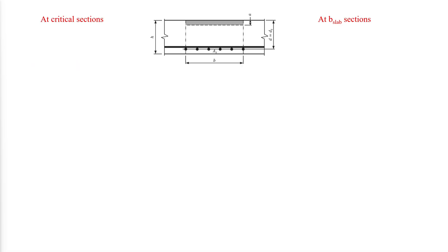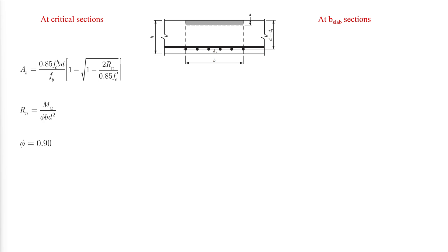The required flexural reinforcement at a critical section in a column or middle strip of a two-way slab can be found using the Rn equation, where Rn and φ are defined accordingly. The factored bending moments, Mu, can be obtained from the direct design method described in the previous video — a link is provided in the description. The area of flexural reinforcement at any critical section cannot be less than 0.0018 times the gross cross-sectional area.